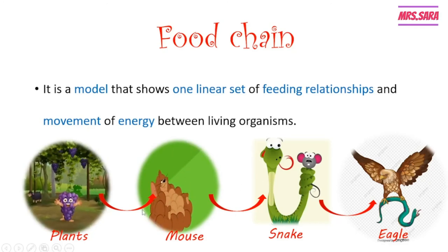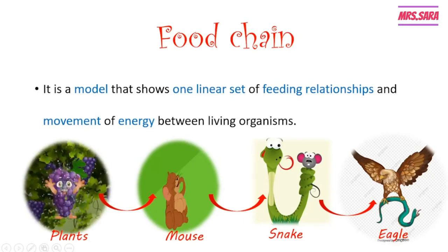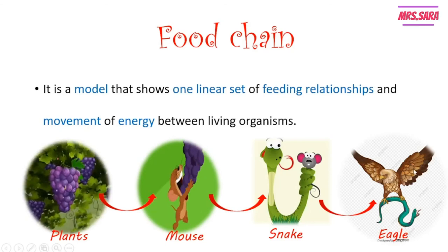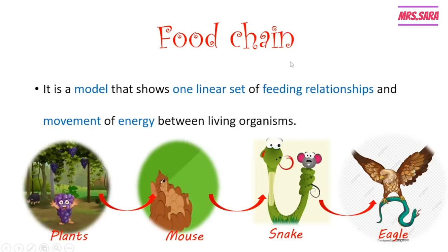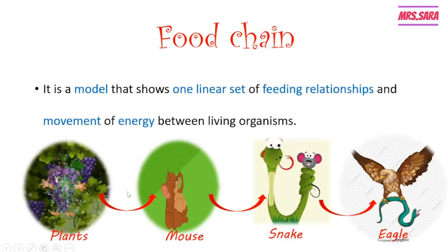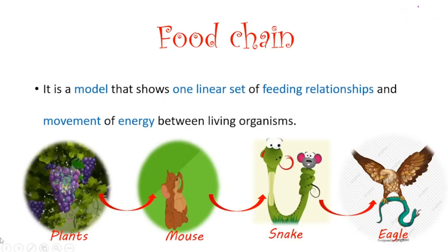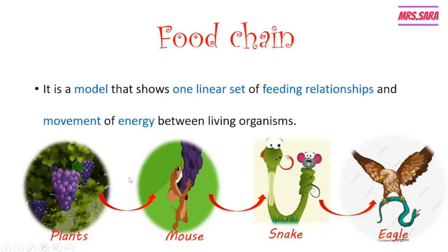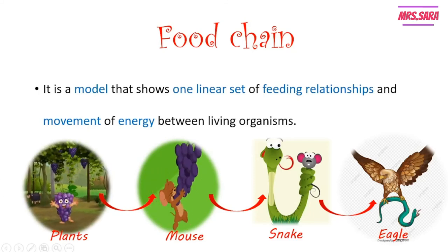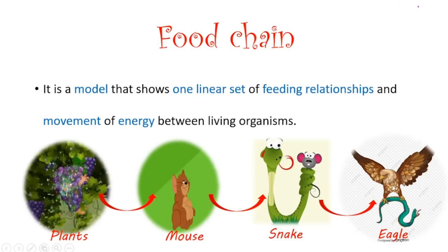The snake eats the mouse, so the snake is a secondary consumer. The eagle eats the snake, so the eagle is a tertiary consumer. This is called a food chain — the energy flow passes between organisms in one linear set of feeding relationships.